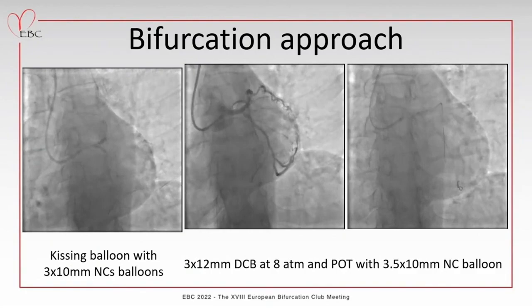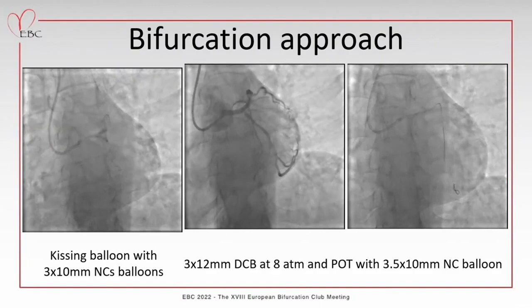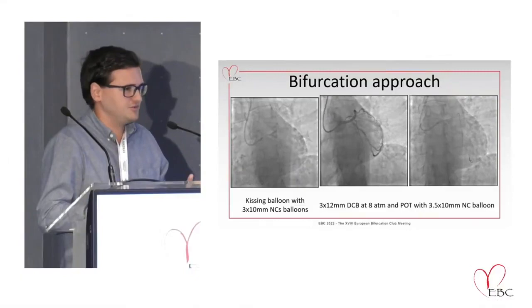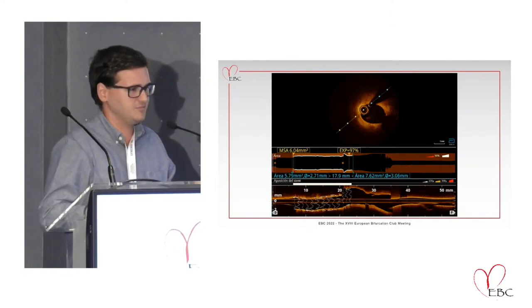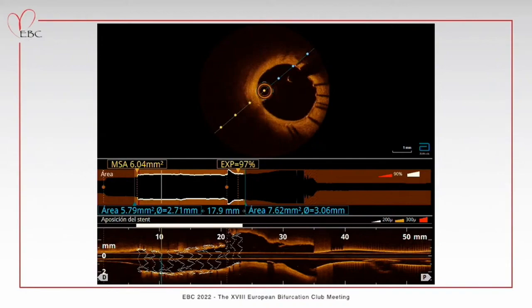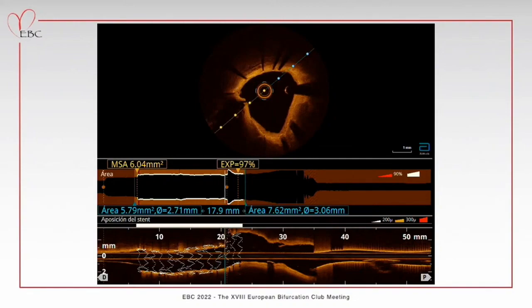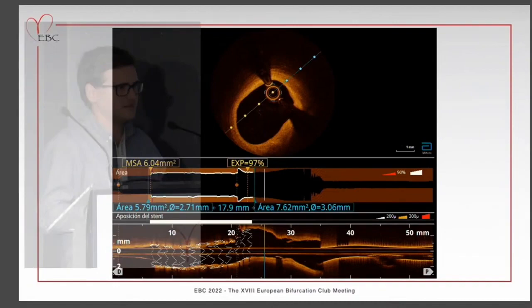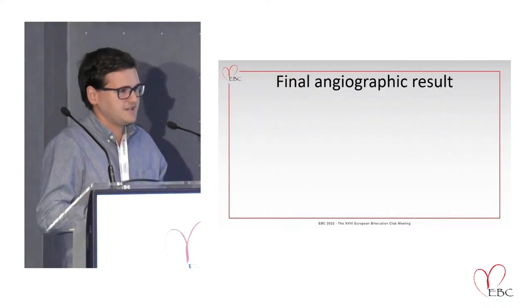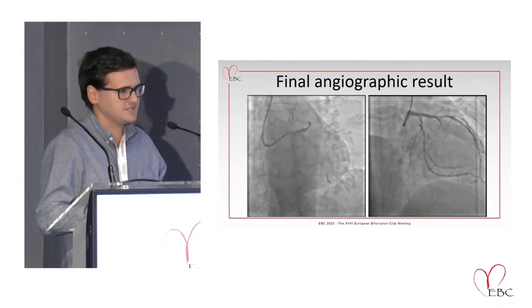Rewiring was confirmed correctly performed. A simple bifurcation approach was then performed: kissing balloon dilatation with two 3.0 x 10mm non-compliant balloons, followed by a drug-coated balloon at 8 atmospheres for 40 seconds, and finally a POT with a 3.5mm non-compliant balloon. Post-procedure intracoronary imaging showed good apposition, good expansion, and struts more open toward the left circumflex. The left main showed no dissection. Wider area in the bifurcation was confirmed post-procedure.